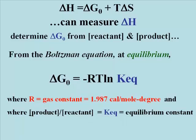We can determine the standard free energy change, or delta G0, indirectly by knowing the equilibrium concentrations of reactants and products in a chemical reaction and using the Boltzmann equation, where R is the gas constant and T is the standard temperature. The gas constant is 1.987 calories per mole degree, and the standard temperature is 298 degrees Kelvin, or 25 degrees Celsius.